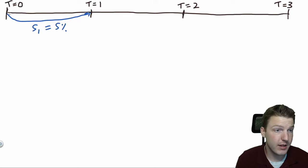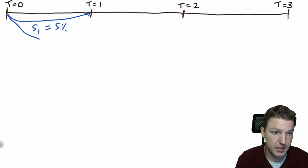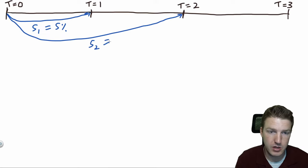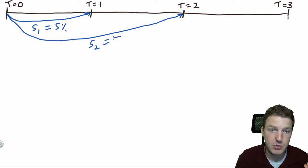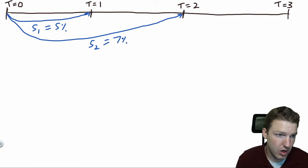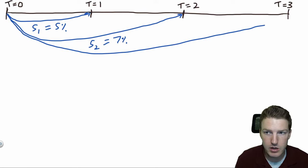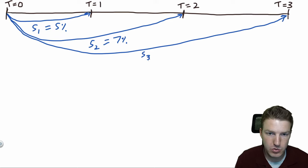Now, let's say you wanted to lend money to someone starting today for two years — we would call that S2. Let's say that rate is 7%; if I want to lend you money today for two years, it'll be 7% per year. And now let's say I want to lend you money starting today for three years — that will be the spot rate for three years, S3. We'll say that equals 8%.